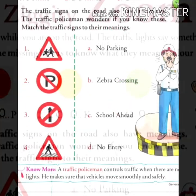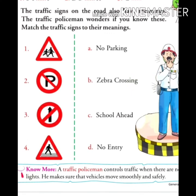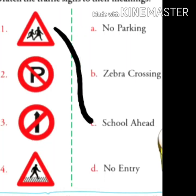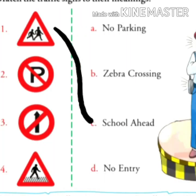Now let us come to section B. Here we have to match the given traffic signs with their correct meanings. The first traffic sign gives drivers advance warning of an upcoming school, so they can slow down and watch the children crossing. The meaning of this traffic sign is school ahead. Take your pencil and join these two — number one is school ahead.